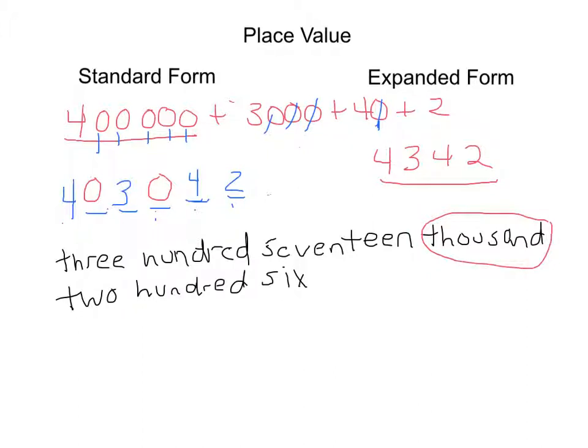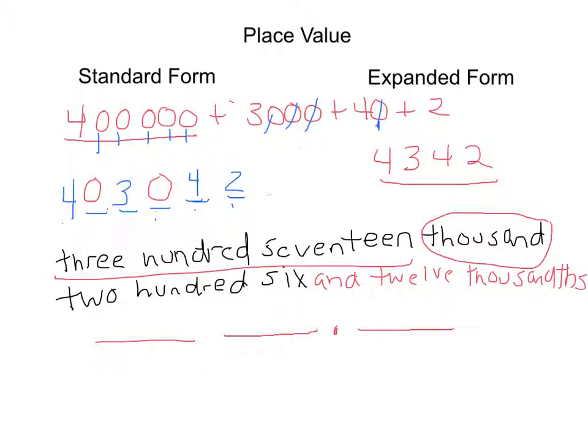And go from that everything on this side would be in the thousands. Then, we have our hundreds, tens, and ones. And if there happens to be anything after the word and, it would go on this side. So, if I were to add, and, let's say, twelve thousandths, they know that this would come after the decimal.